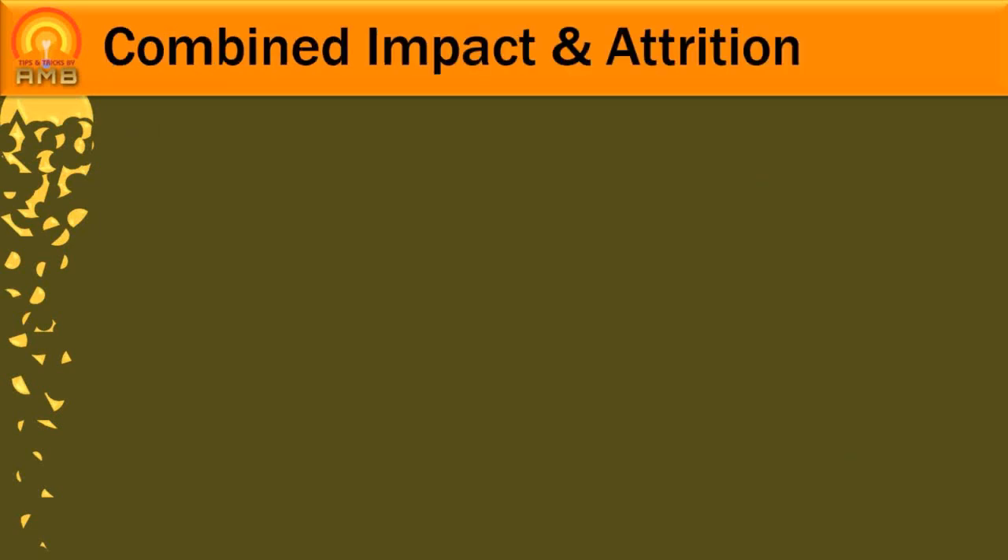Last mechanism is combined impact and attrition. Mechanism of impact and attrition can be combined in some mills to get better results. Here you can see that material is struck by moving hammers and also it comes between two surfaces of hammer head and another moving surface which moves in opposite direction.